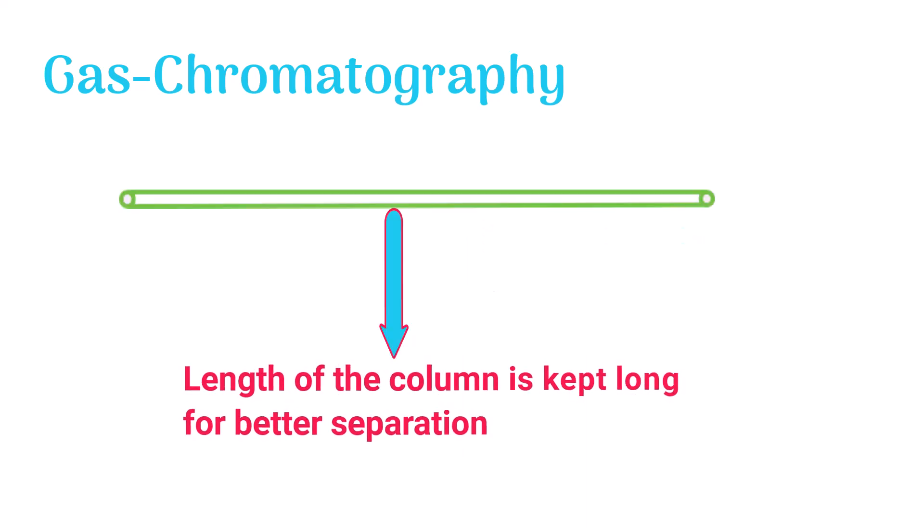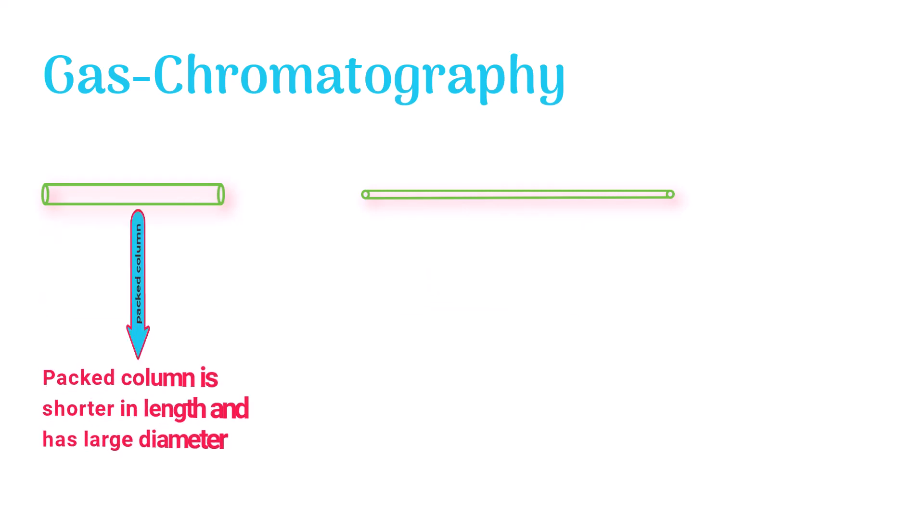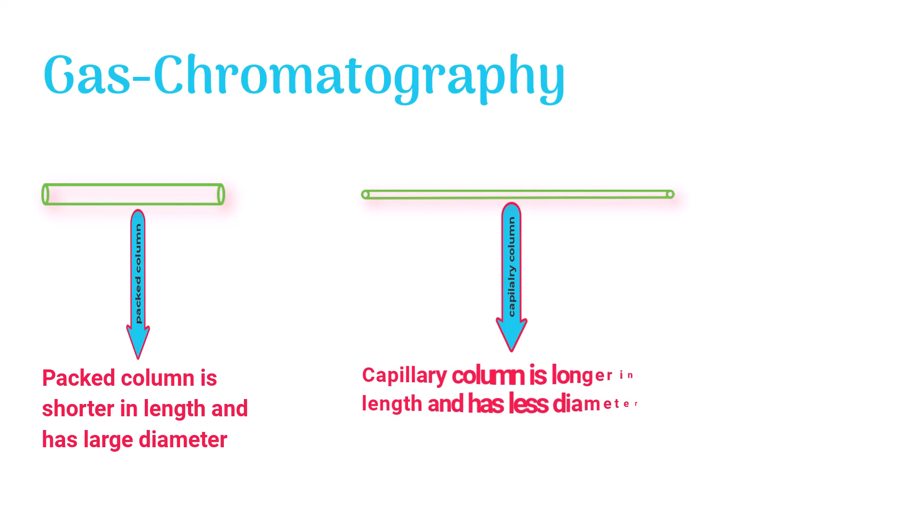The length of the column is kept long for the sake of better separation. The column could be of different types like packed column and capillary column. The packed column is shorter in length and has a large diameter, while the capillary column is longer in length and has less diameter.